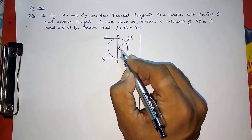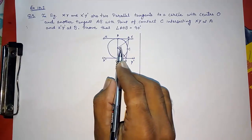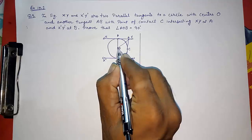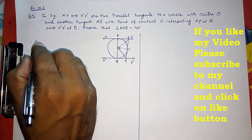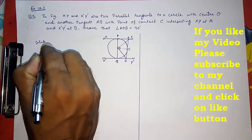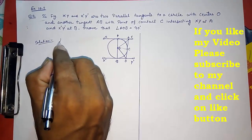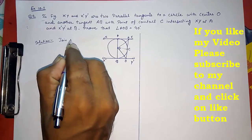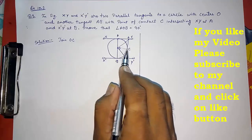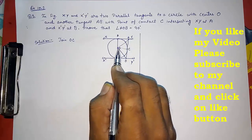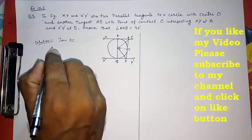To prove this 90 degrees, the first step of the solution is to join OC. Now we have joined OC and we are getting two triangles: △PAO and △CAO. We are going to prove these congruent.